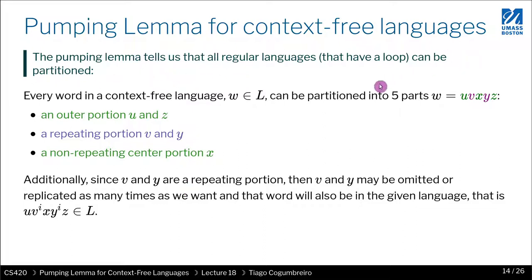So in essence, the pumping lemma for context-free languages tells us that all context-free languages can be partitioned in three ways, where you have an outer portion u and z, and you have a repeating portion v and y, and a non-repeating portion in the middle x. And the v and the y can be pumped n times, such as in here, and the pumped string is still in the language.